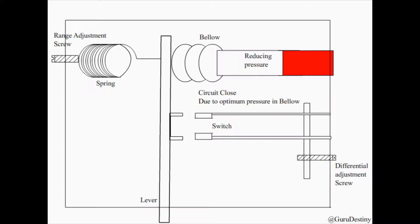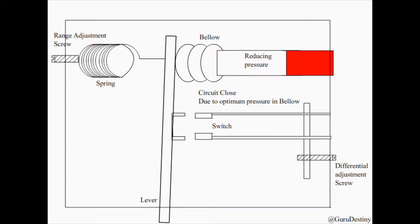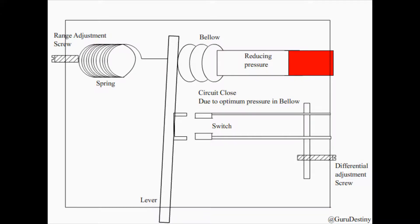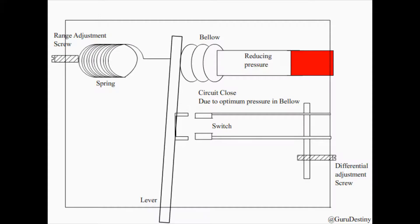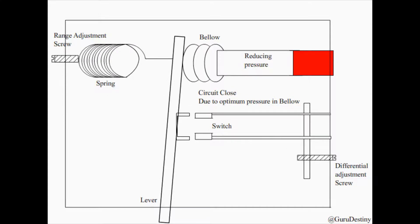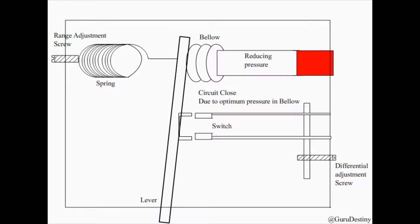We can see here discharge pressure in compressor is reducing, indicated by red color. The spring is exhibiting more pressure on the lever, and the bellow gets compressed or shrinks.